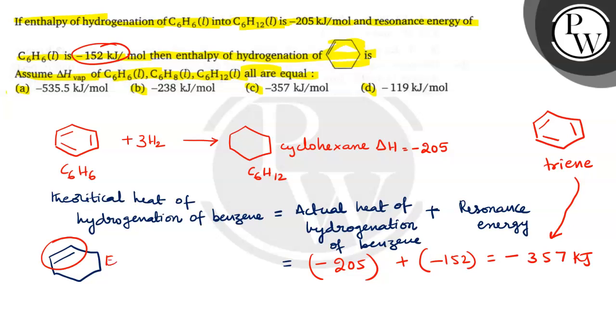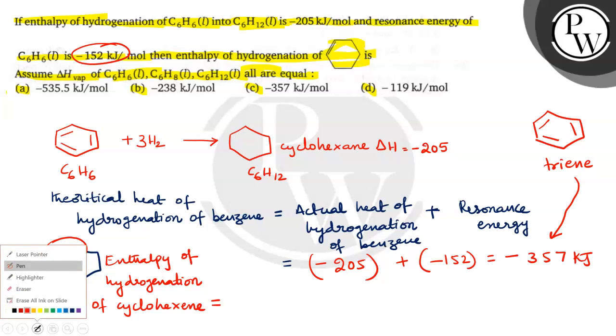So, enthalpy of hydrogenation of cyclohexene, for one double bond, is equal to minus 357 divided by 3, that is equal to minus 119, 119 kilojoules per mole.